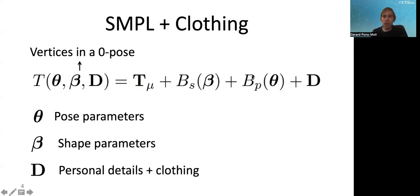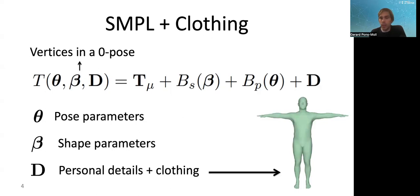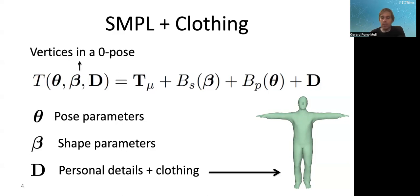If you remember, SMPL is based on blend shapes — you add a set of vector displacements on top of a base shape in order to model shape deformations and pose-dependent deformations, and everything happens in this canonical T-pose. Now if we want to model clothing, the easiest thing we can do is to add a set of vertex displacements which will model the clothing on top of the base average shape in the canonical pose. If we know the displacements, you can go from a shape that is undressed to a shape that is dressed. We will see the advantages and disadvantages of this representation.